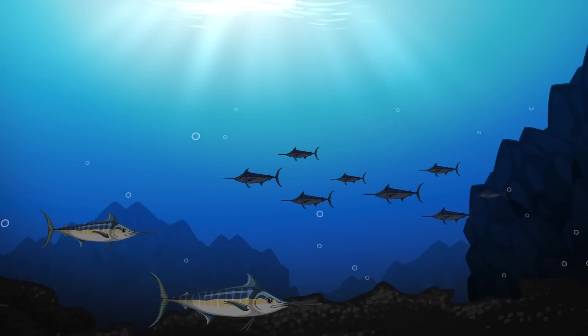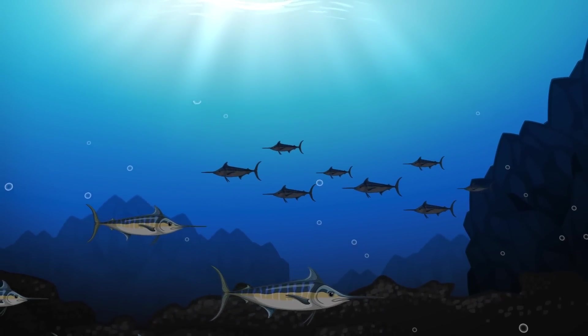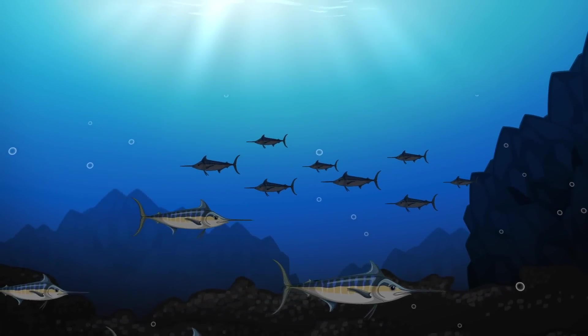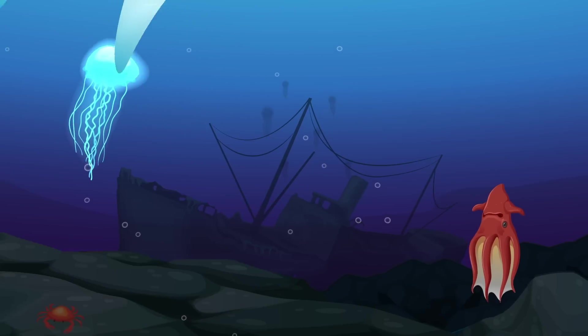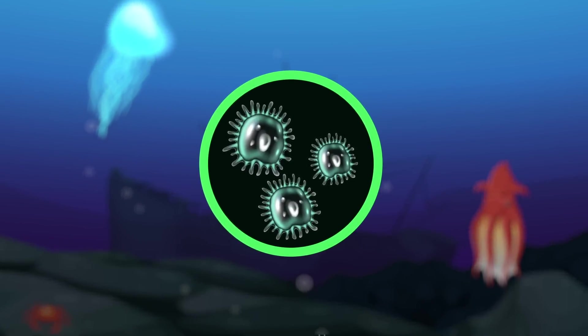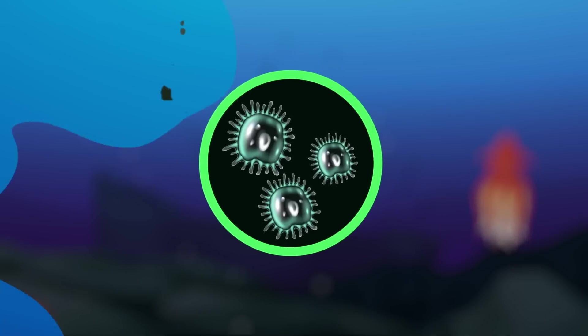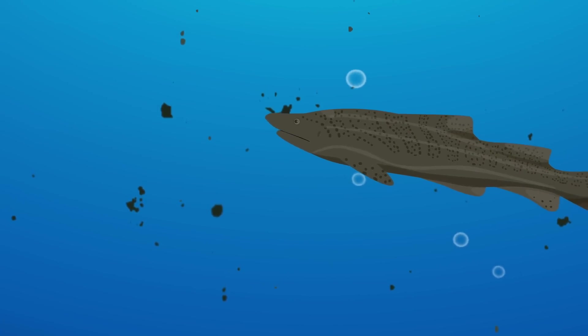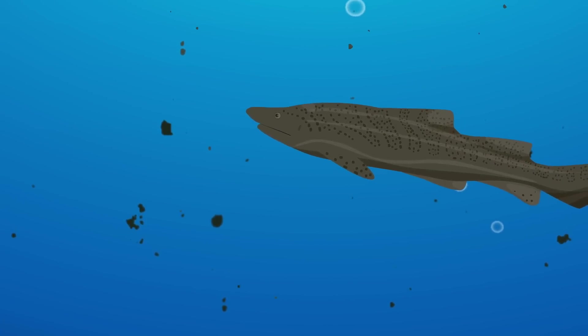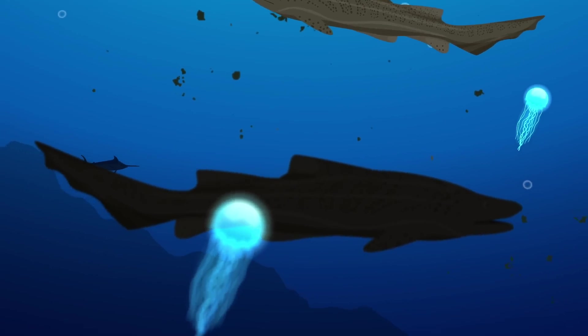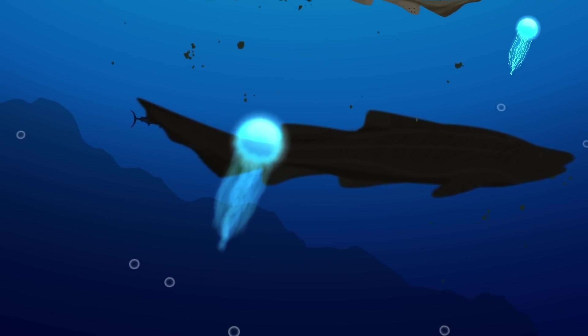Some light penetrates the twilight zone, but not enough for photosynthetic plants to reliably convert sunlight into food. Common producers like phytoplankton cannot survive, so mesopelagic animals must rely on food that falls from the upper ocean. Bits of dead material and waste, known as marine snow, consistently sink into the twilight zone, feeding the many creatures that thrive in this gloomy environment.